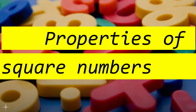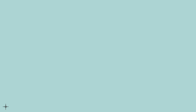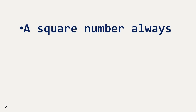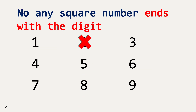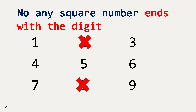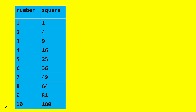Now let's discuss some properties of square numbers, starting from the unit digit. A square number always ends with the digits 0, 1, 4, 5, 6, or 9. It never ends with the digits 2, 3, 7, or 8. So if a number ends with 7, 8, 3, or 2, it can never be a perfect square.